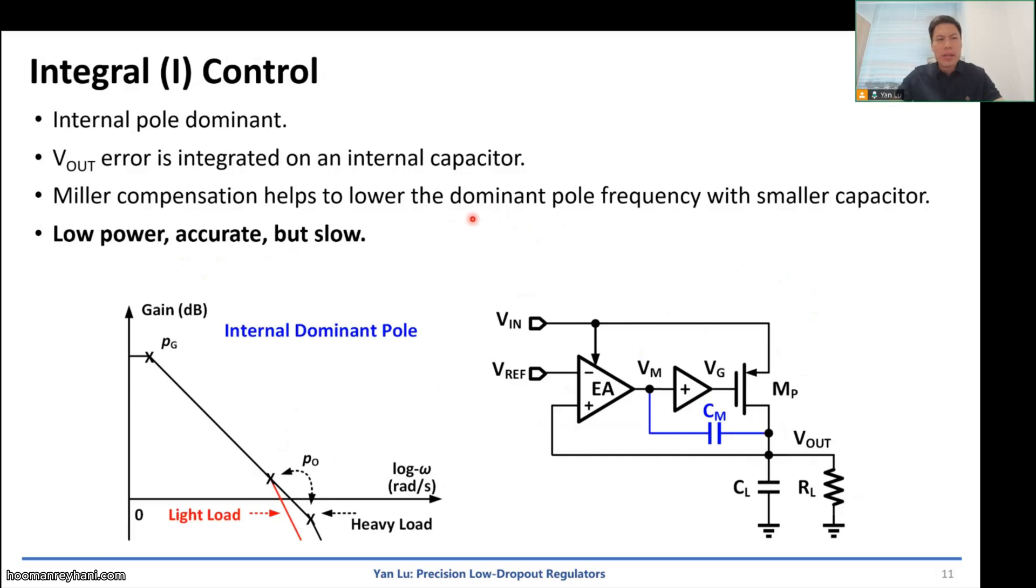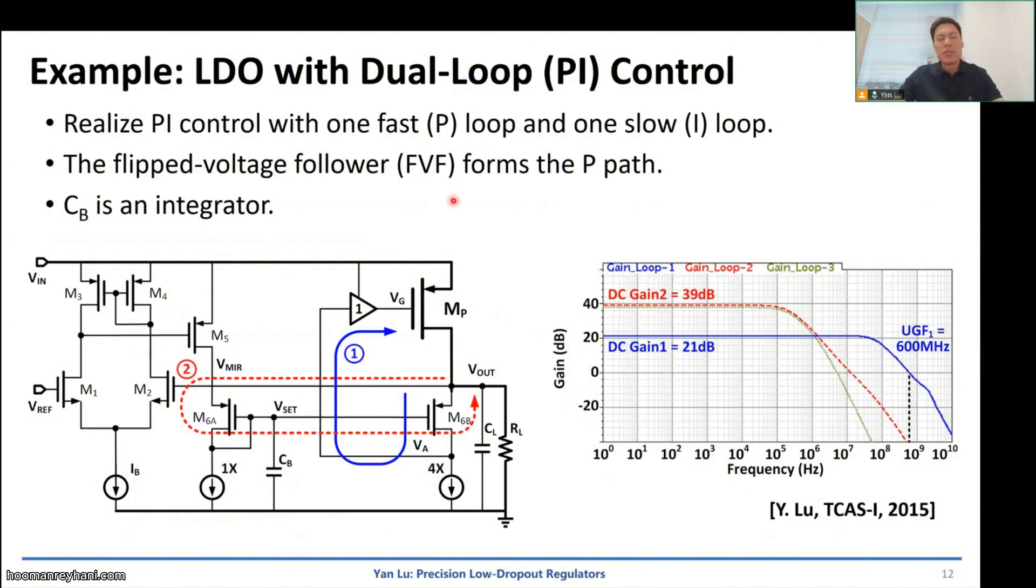And how about I control? So actually, we can use a capacitor to integrate the past information, like the well-known Miller compensation. It will store the past information on the capacitor. It can give us a dominant pole. And then we can get an accurate feedback loop with low power. But it will be relatively slow, limited by the light load output pole, right? Like we mentioned, at light load and small currents, we will have low-frequency output pole.